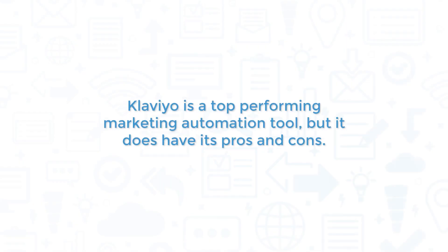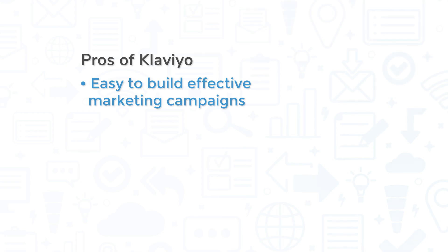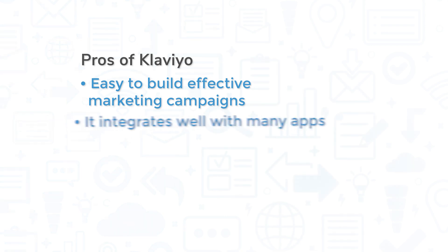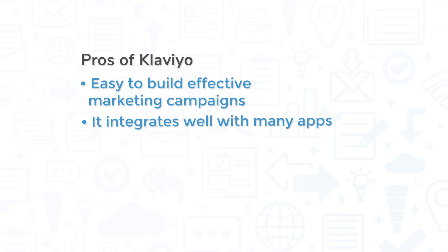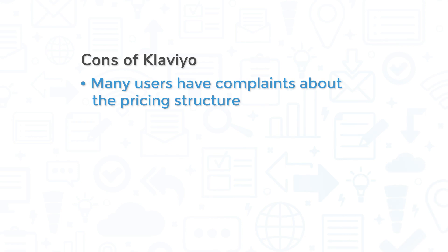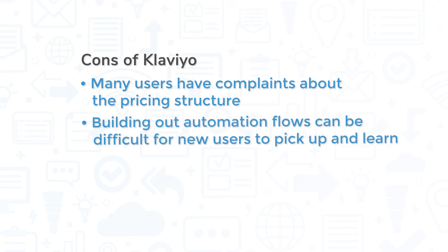Klaviyo is a top-performing marketing automation tool, but it does have its pros and cons. The most prominent pro is how easy it is to build effective marketing campaigns — the intuitive design and customization makes it simple to create the right campaign for your business. Klaviyo also integrates well with many apps including Shopify, Facebook, and Salesforce. On the downside, many users have complaints about the pricing structure, either because of the high price point or because it can be cumbersome since it is calculated based on updating your contacts list. Due to the extensive options available, building out automation flows can be difficult for new users to pick up and learn.